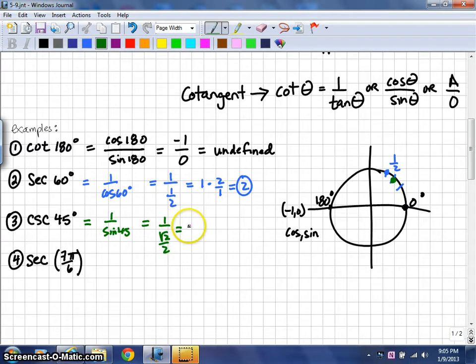Again, if you're doing division, it's much easier to change that to multiplication and say 1 times 2 over the square root of 2.